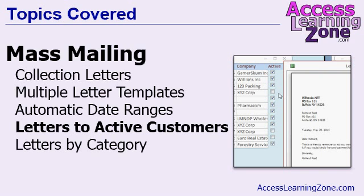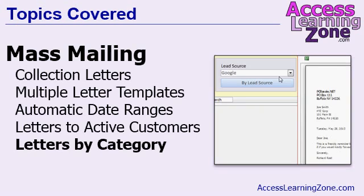Next, we're going to broaden the letter writing form so that we're not limited to just sending collection letters to customers. We're going to utilize the "is active" field that we added to our customer table way back in lesson one, so we can send a letter to all of the active customers in our database. Then finally, we'll utilize the lead source category that we put on our customer form so we can send a letter just to customers in a particular category or lead source.